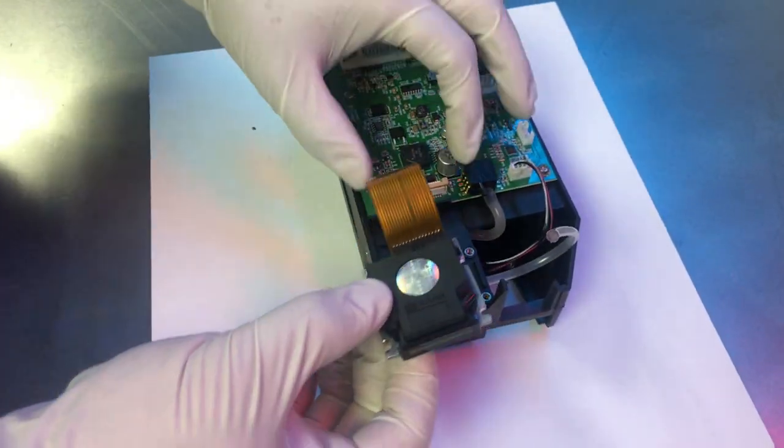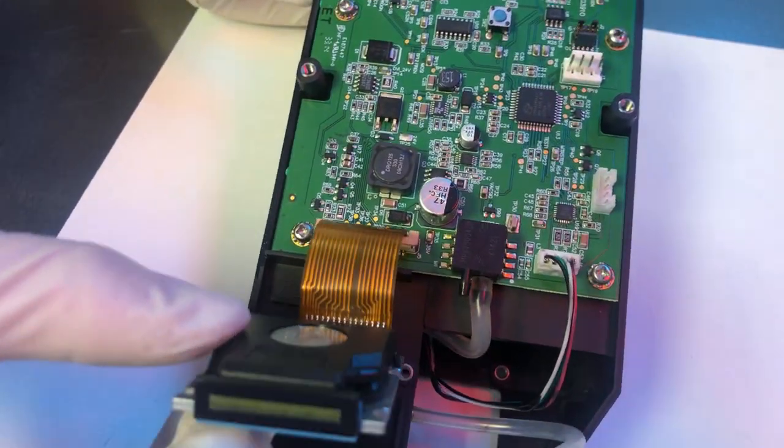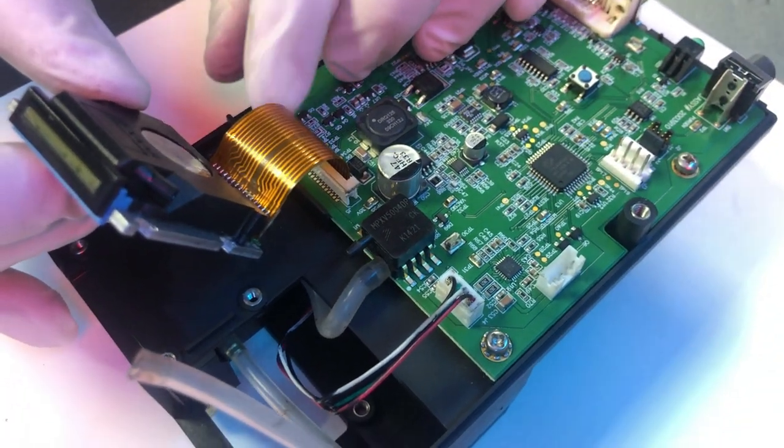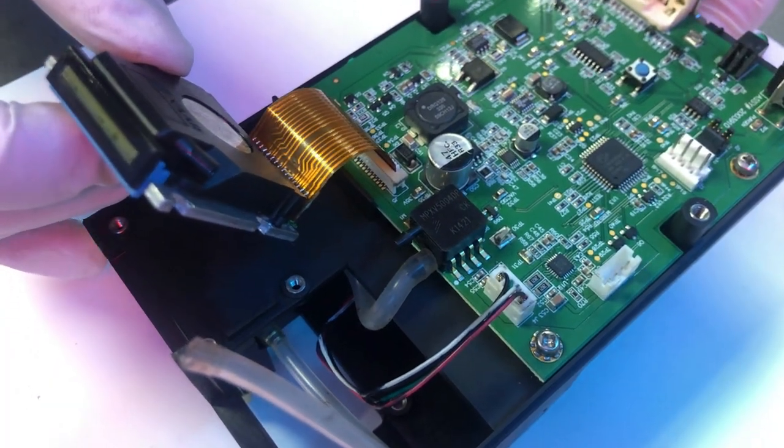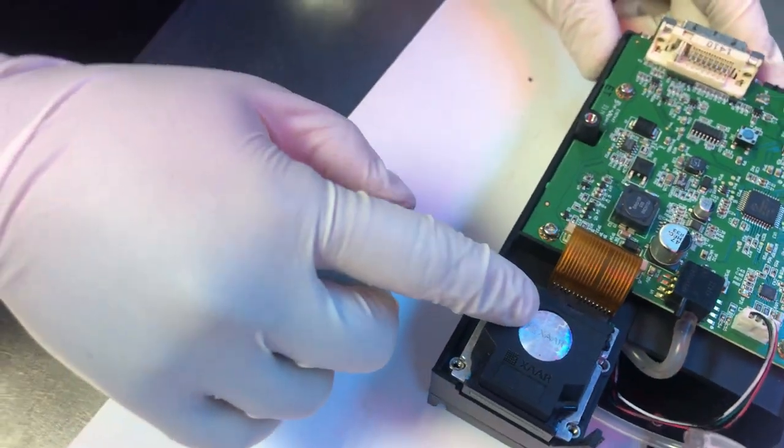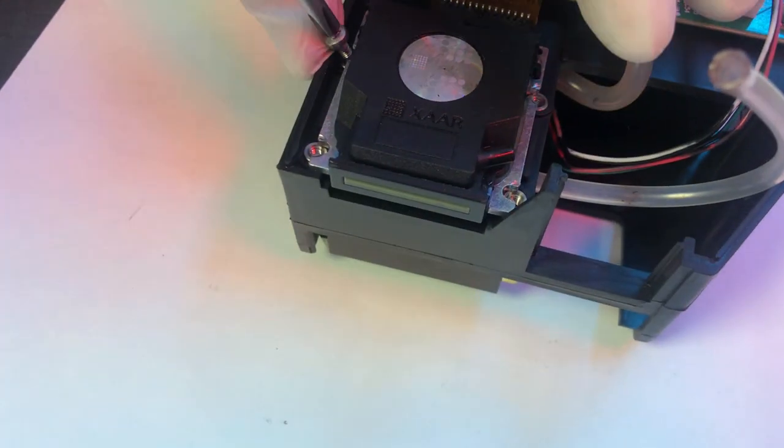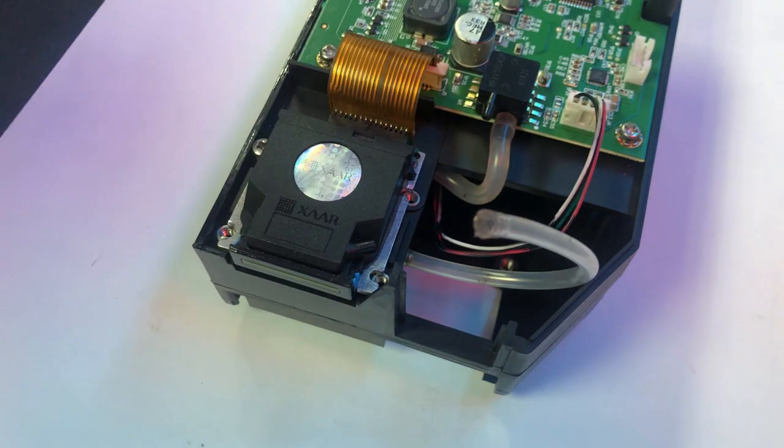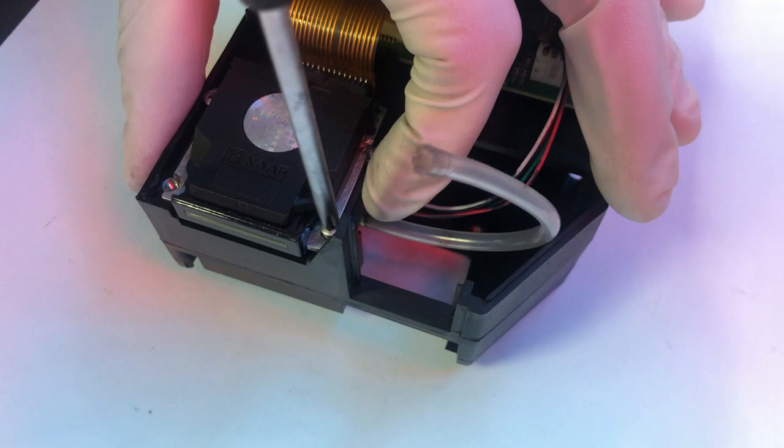Now we'll install the flat data cable into the print board. Install it flat and then go ahead and push the tabs in on either side. Now we're able to carefully place the print engine down and tighten up the four screws. It's a good idea just to get them started, then tighten them up after all four have been installed.